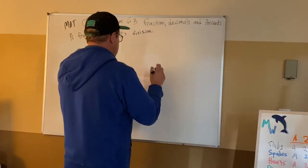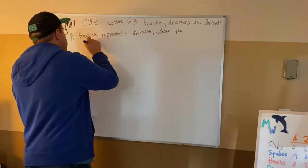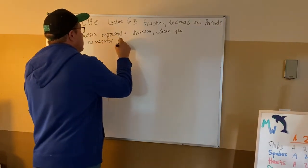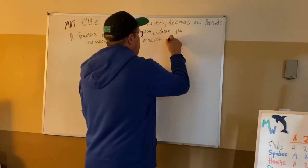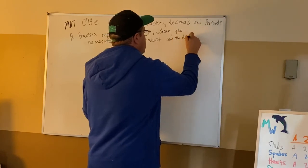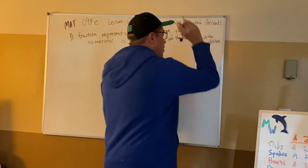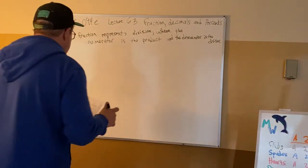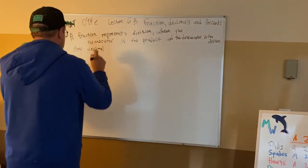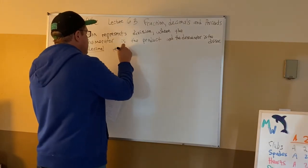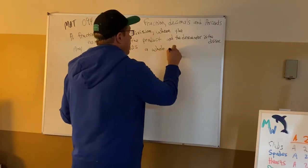The numerator is the product — the result of the multiplication that got us here. It's the biggest of the numbers in most cases. And the denominator, which is the bottom of the fraction — the numerator is the top — is the divisor. It's the number you divide by. Start with your numerator and divide by your divisor. That's what a fraction does.